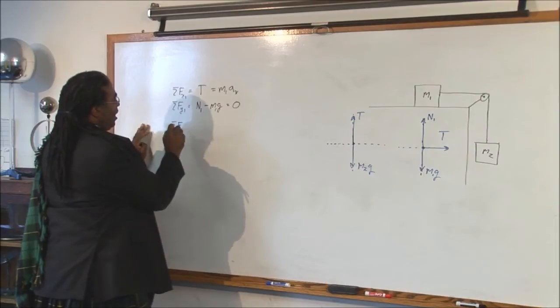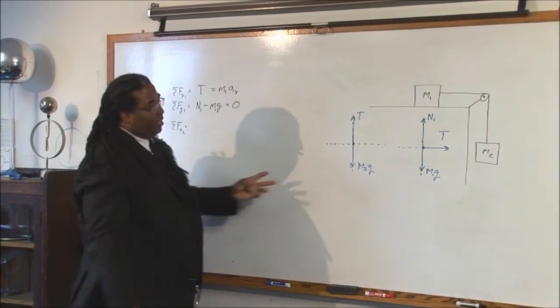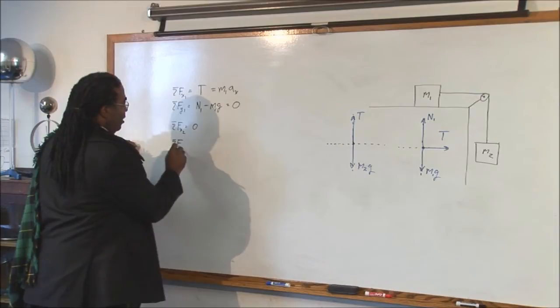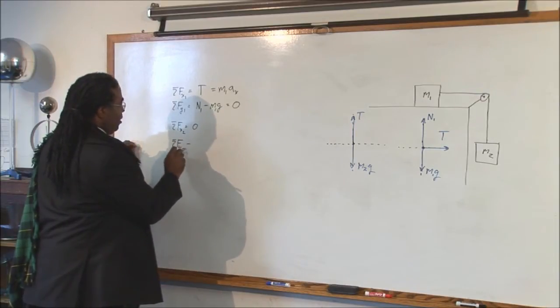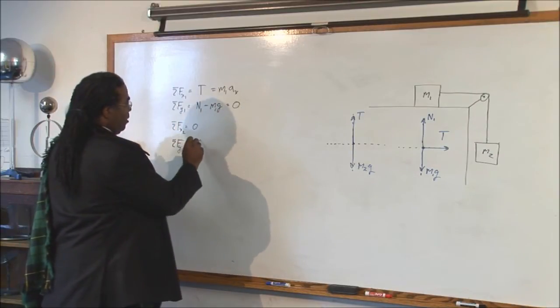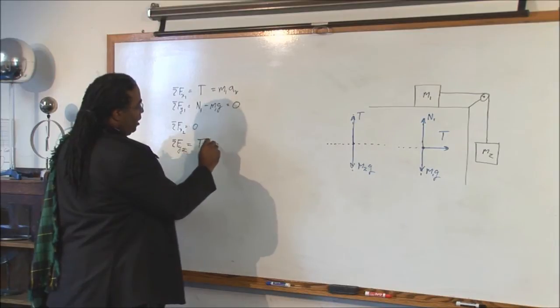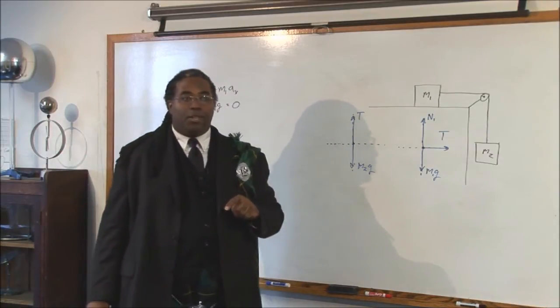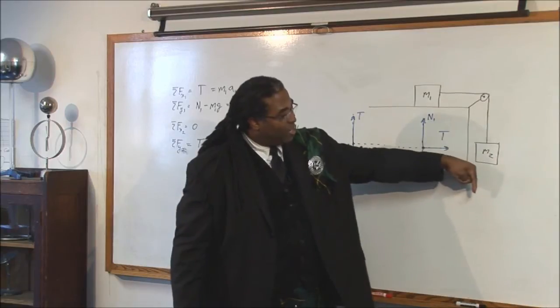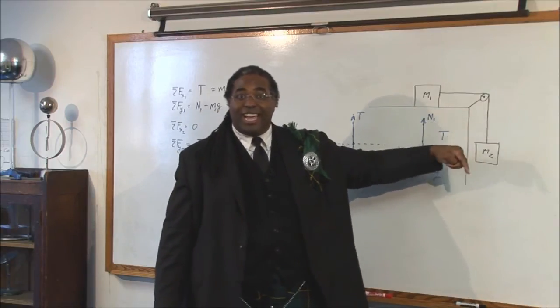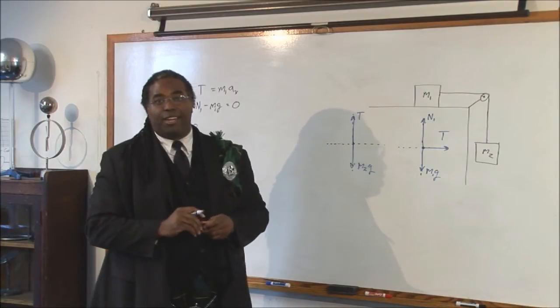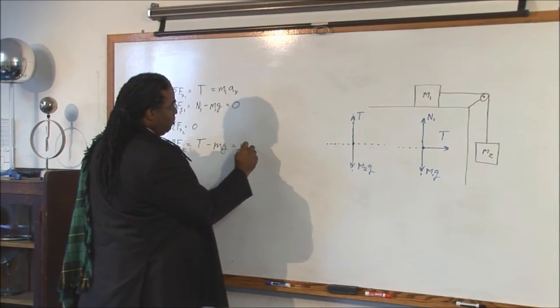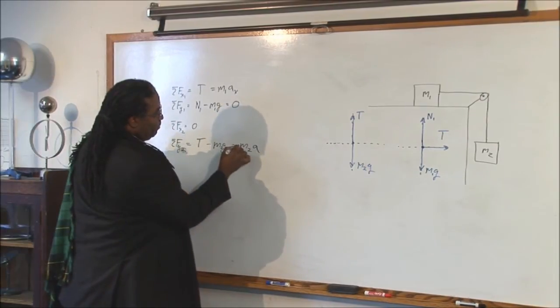The sum of the forces in the x on the second block, there are no x forces. So, we know that that's equal to zero. And the sum of the forces in the y on block two, that's equal to, we have the tension going up. We have mg going down. And what direction do you think that the system would move? Well, looking at it, this block is going to get pulled this way. So, this block is accelerating down. Since acceleration is a vector, and that's in the negative y direction, that makes this acceleration negative. So, this would be m2a negative.